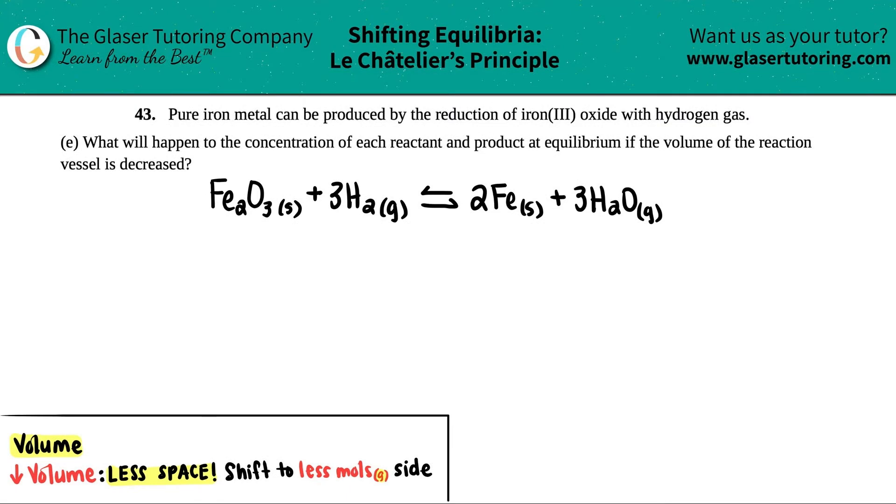Number 43: Pure iron metal can be produced by the reduction of iron(III) oxide with hydrogen gas. Then we have letter e: What will happen to the concentration of each reactant and product at equilibrium if the volume of the reaction vessel is decreased? Okay, so Le Châtelier's Principle, we're on letter e.